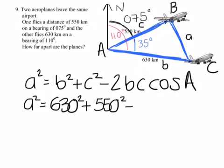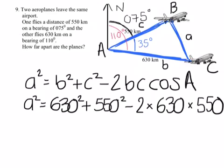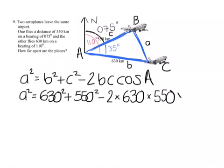And that's minus 2 times b, which is 630, multiplied by c, which is 550, multiplied by cos of A, which is cos of 35 degrees.